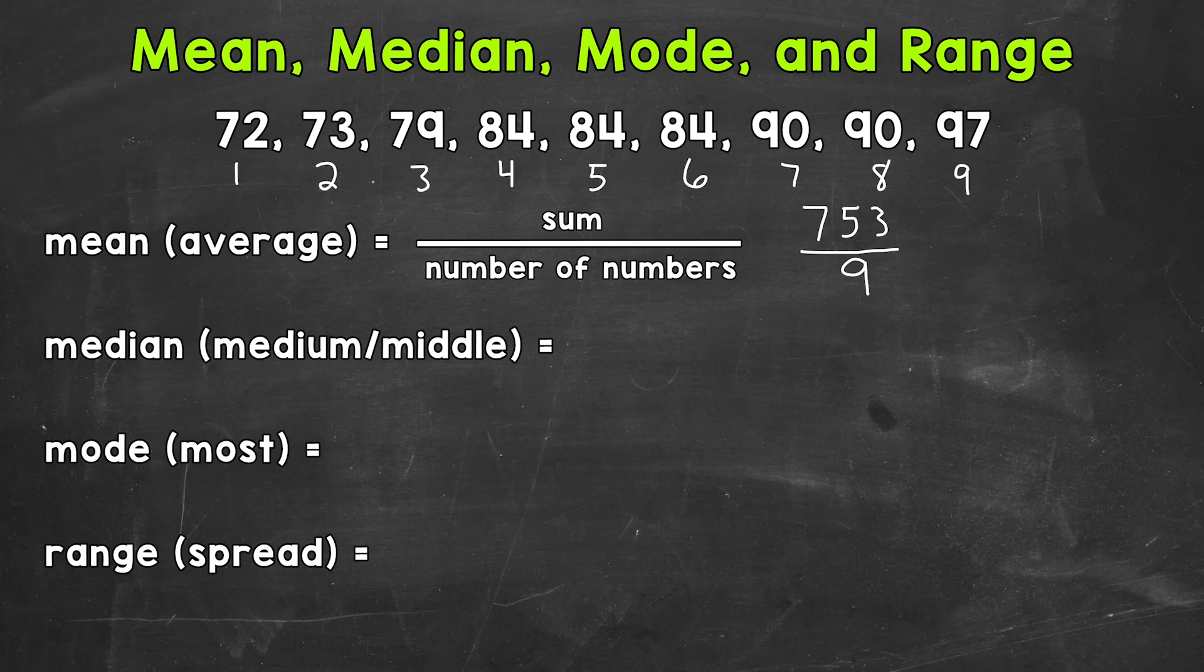Now after calculating this, we're going to get a repeating decimal. So 83 and then we get repeating sixes. So what I'm going to do, I'm going to round this to the nearest hundredth. So the hundredths place, let's look to see if we round up or stay the same. We round up. So our mean rounded to the nearest hundredth is going to be 83.67.